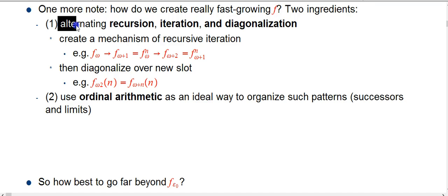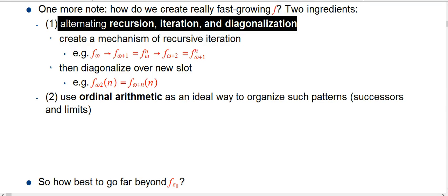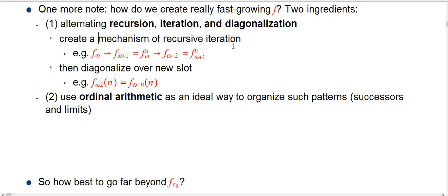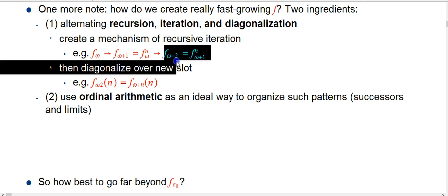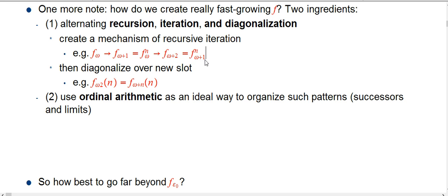The first ingredient is alternating recursion, iteration, and diagonalization. You create a mechanism of recursive iteration, meaning f_ω+1 is defined by iterating, repeating the previous one. Then you diagonalize over the new slot. So f_ω of n, then diagonalize over new slot: omega, omega plus one, omega plus two, and so on. Then omega two was created by diagonalizing over that and letting that be part of the input.